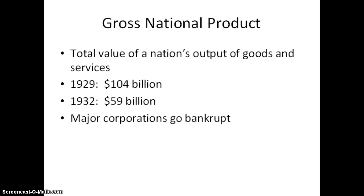The gross national product is a measure of a nation's economy — the total value of a nation's output of goods and services. In 1929, the United States had a GNP of $104 billion. By 1932, it had fallen to $59 billion.